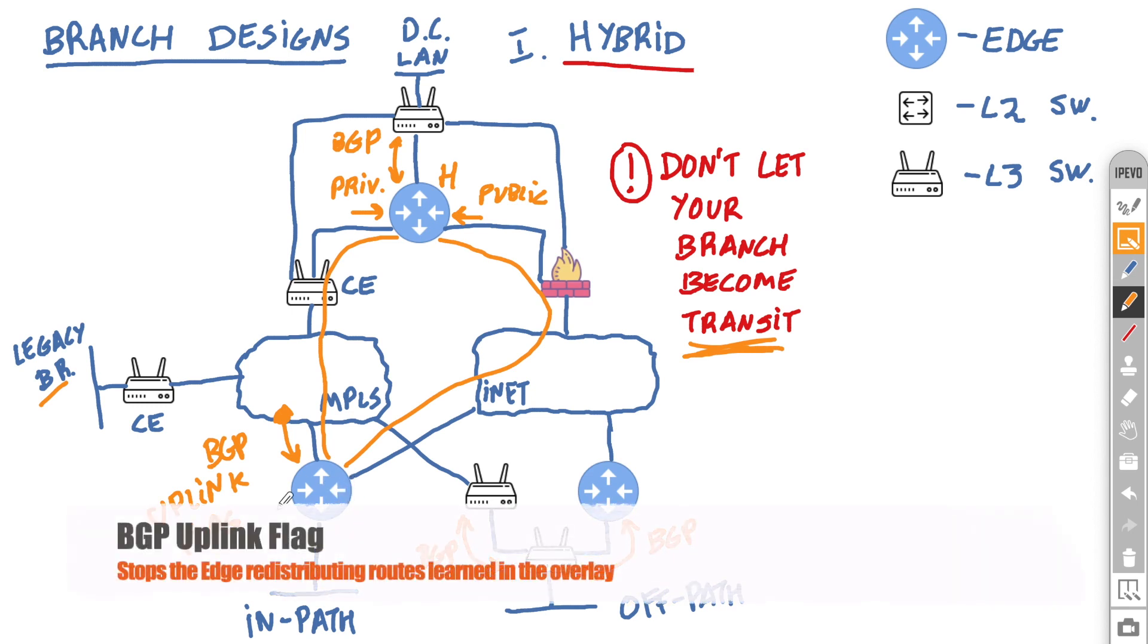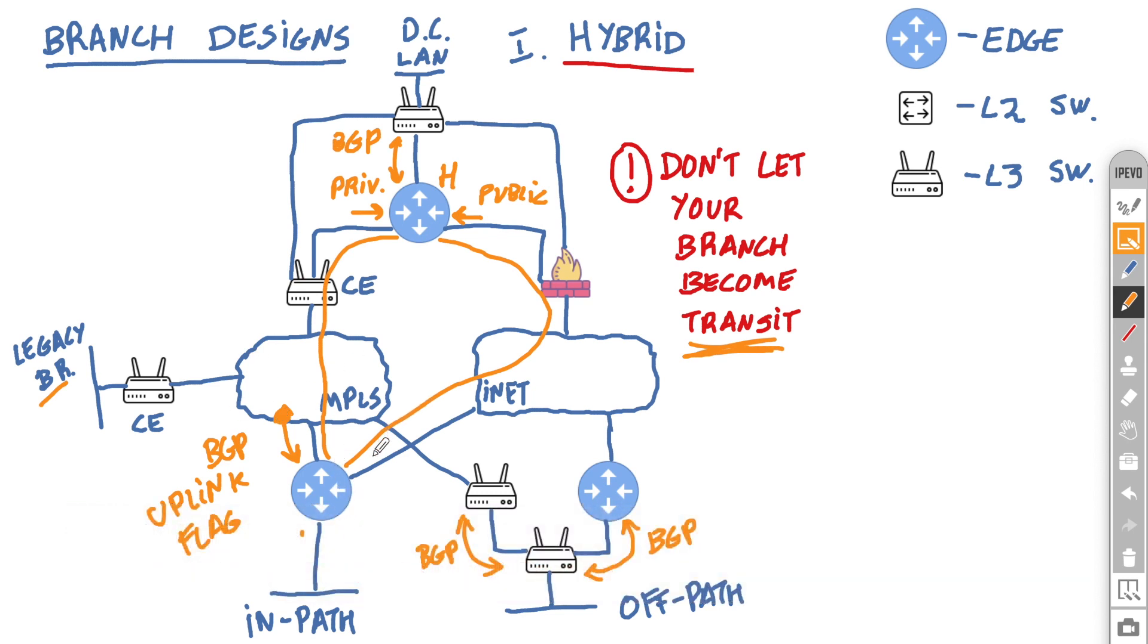So this means that no matter how many prefixes the edge learns via BGP from the MPLS, it will not redistribute it in the overlay. So everybody else that's connected with the overlay links will not notice that the edge here is connected via the underlay. Now this uplink flag feature is useful and we will assign it to the BGP peering here. This means that any routes that are advertised from the neighbor will still make it to the routing table. So we can still route locally via the underlay. However, we will not redistribute this in the overlay.